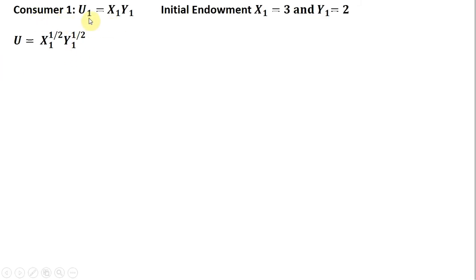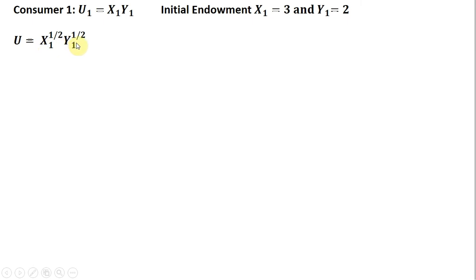Doing that for consumer 1, we normalize the exponents to sum to 1. Following that rule, it's going to be 1 divided by 1 plus 1, or just one half. For the y term, b is 1 divided by a plus b where a is 1, so it's also one half. Notice the exponents sum to 1, reminding us of consumer 1's initial endowment.